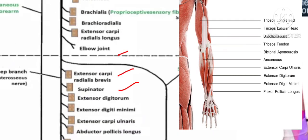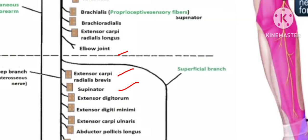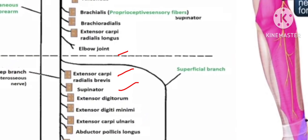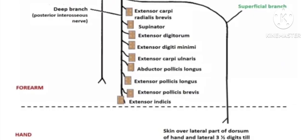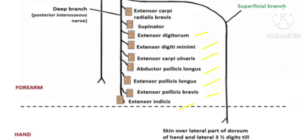Next, after the elbow joint, the deep branch supplies the supinator muscle. After crossing the supinator, the posterior interosseous nerve supplies: extensor digitorum, extensor digiti minimi, extensor carpi ulnaris, abductor pollicis longus, extensor pollicis longus, extensor pollicis brevis, and extensor indicis — all the posterior compartment muscles of the forearm.